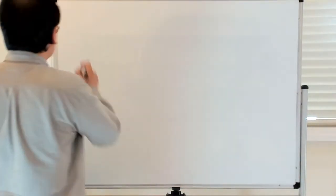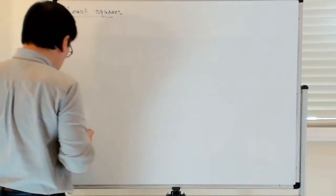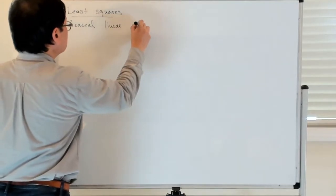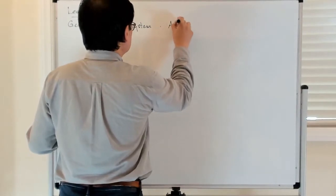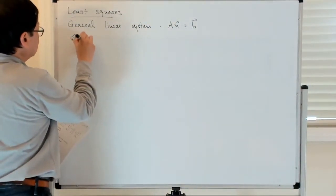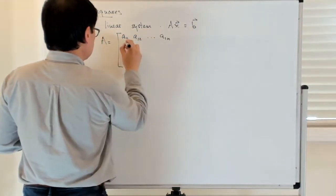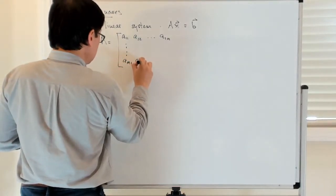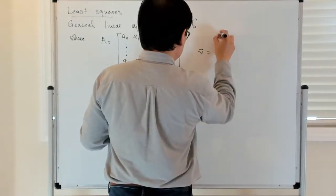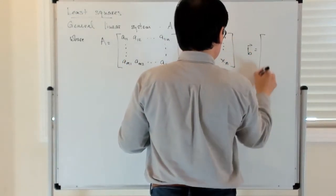So now we're going to talk about least squares problems. Let's consider a general linear system Ax equals b, but we're not going to necessarily assume that the matrix A is square. So A is going to be some sort of matrix which isn't necessarily square. x is a vector of unknowns — there are n unknowns — and b is the right-hand side, with m of them.